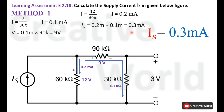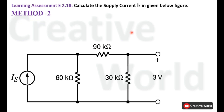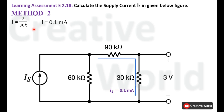Now we will move towards the second method and solve this same problem using the current divider rule. In order to use the current divider rule, we first have to calculate one branch current. Since we have the voltage across the 30 kΩ resistance, the current of the 30 kΩ resistance is 3 divided by 30 kΩ, which is 0.1 milliampere. We are considering this current as I2 and the other branch current as I1.